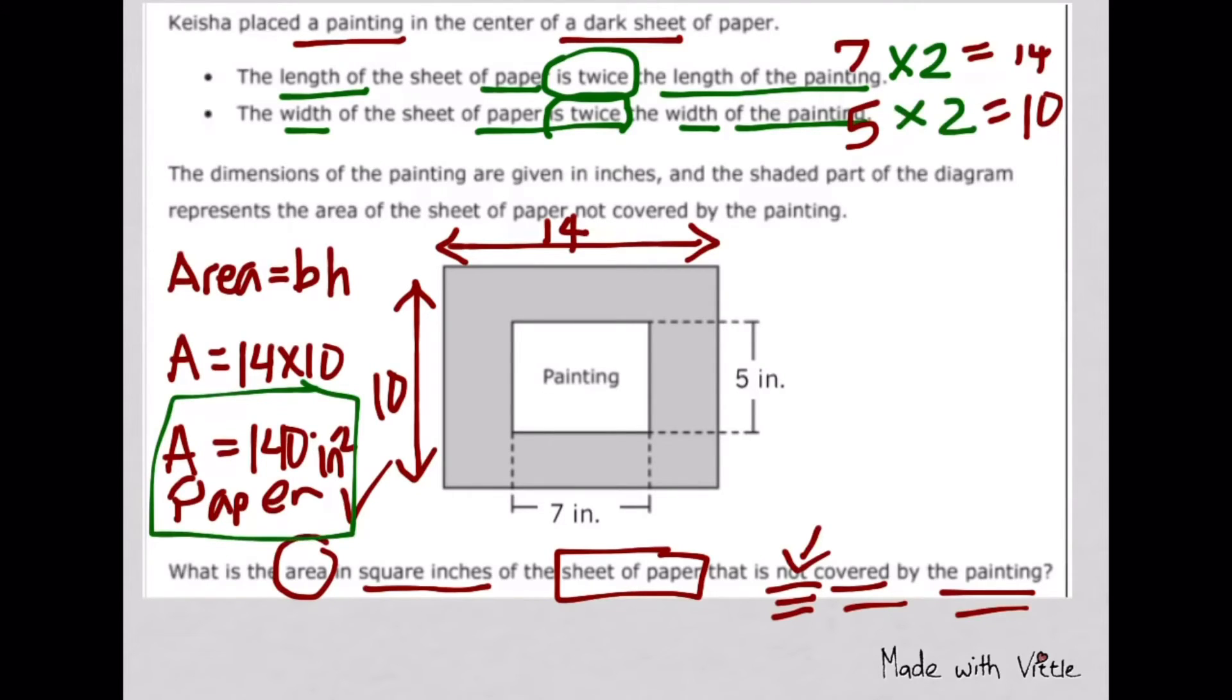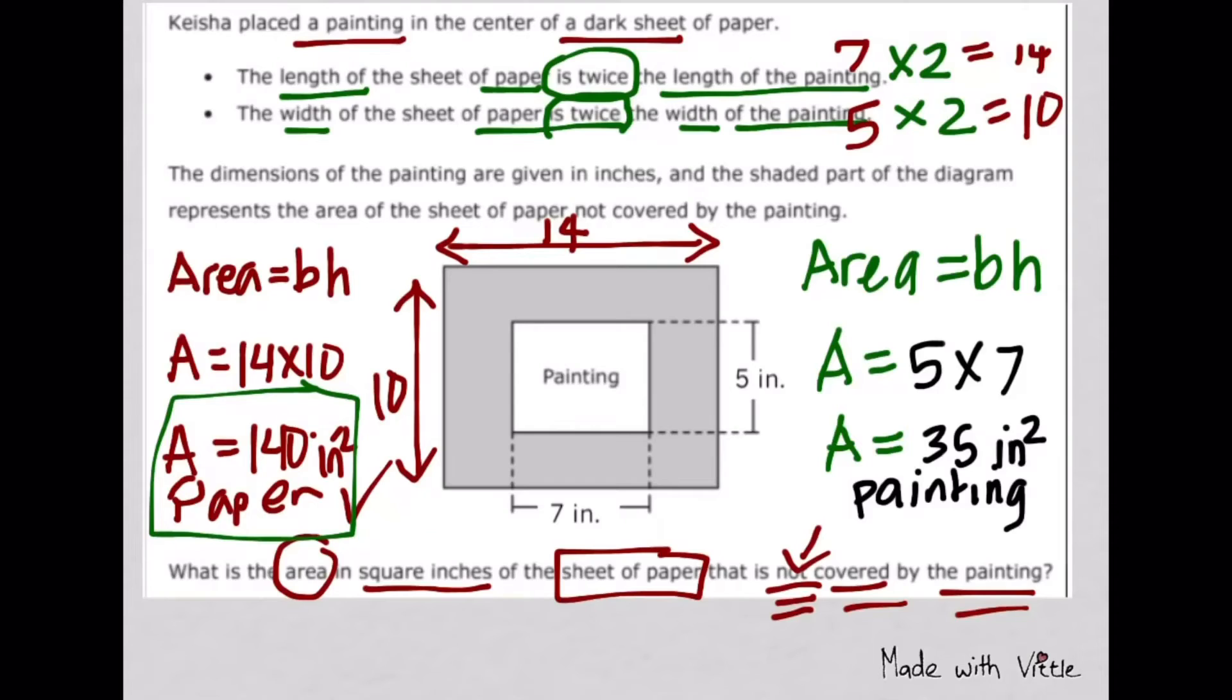Now that you have the length and width of the paper, multiply it to get the area. Now find the area of the painting - the area is 35 square inches. They're asking for the area that's not covered by the painting. That means the gray ones are not covered. So what are we going to do? You have to subtract them. When you subtract the area that's covered with the painting, it's going to leave you the area that is not covered.